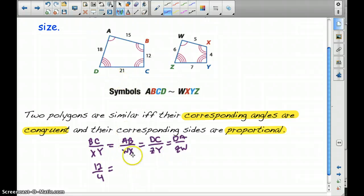DC, or excuse me, AB is 15 and WX is 5. DC is 21 and ZY is 7. And DA is 18 and ZW is 6. So are all of these proportional?